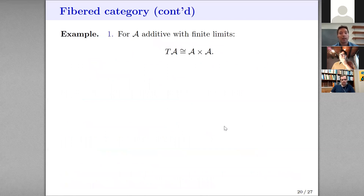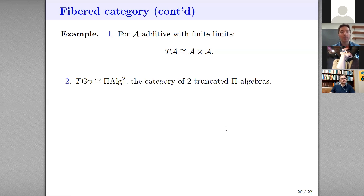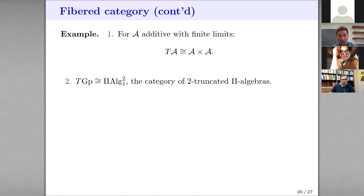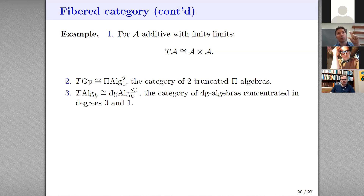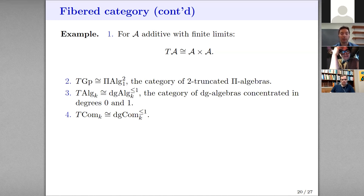In this project I'm focusing on the 1-categorical version — the simplicial direction for homotopy theory is only coming from the simplicial direction, not the full-blown homotopical construction. What does the tangent category look like? If you start with an additive category that has finite limits, its tangent category is canonically just the product — just like the tangent bundle of a Euclidean space is canonically the Euclidean space times itself. For groups, it's a group and a module over it — that's the bottom part of a π-algebra, which looks like π₁ and π₂ of a space. For k-algebras, you get an algebra and a bi-module over it — the bottom part of a DG algebra. For commutative algebras, it's a commutative algebra and a module over it — the bottom part of a commutative DG algebra. So those tangent categories are not too exotic.